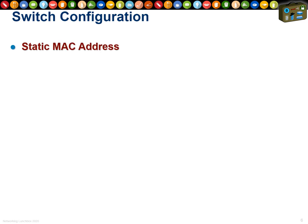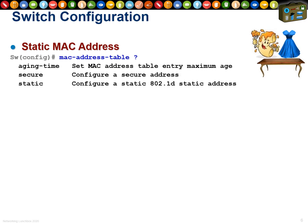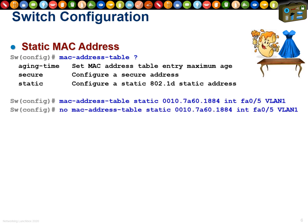To stop CAM table starvation, we can use the MAC address table command with options: aging time, secure, and static. We can set up a static entry for server 2 and server 4 — specifying their interface, MAC address, and VLAN — so those entries can never be forgotten. No matter how full the CAM table gets, those static entries were there first and can't be overwritten, so the private conversation between server 2 and server 4 remains private.